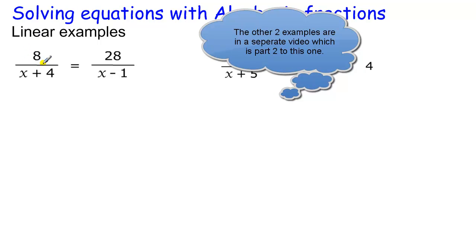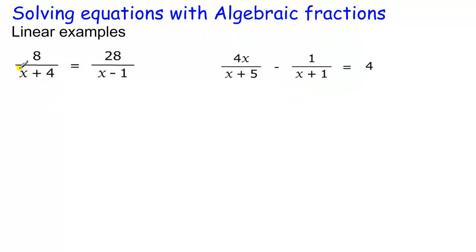So to start with, when we've got fractions, the most useful technique to get rid of fractions is to multiply through by the denominators. So this x plus 4 that's on the bottom of this fraction, if I times this fraction by x plus 4, times this fraction by x plus 4, then this bit and this bit cancels, to leave me with 8 equals 28 lots of x plus 4 over x minus 1.